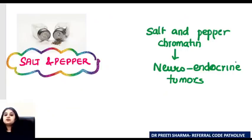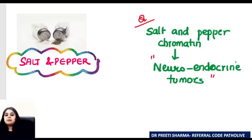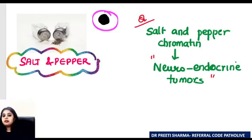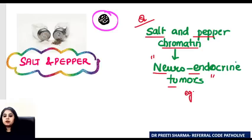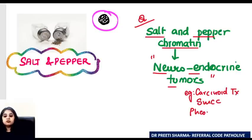For spices: salt and pepper chromatin is the term used for all neuroendocrine tumors. The nucleus is overall dark but has white dots in some areas — dark and light together, like salt and pepper. This salt and pepper chromatin is seen with NETs — neuroendocrine tumors — such as carcinoid tumor, small cell carcinoma of the lung, and pheochromocytomas.